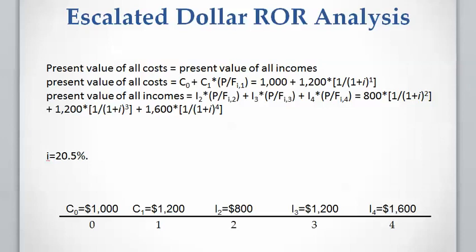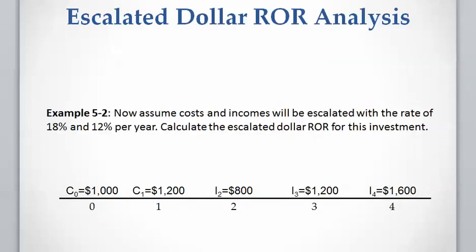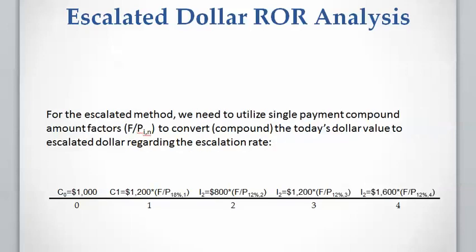Now let's consider an escalation rate of 18 percent for costs and an escalation rate of 12 percent for income. Let's calculate the escalated dollar cash flow and then calculate the rate of return for the escalated dollar cash flow. To calculate the escalated dollar cash flow, we need to compound each payment by the escalation rate, considering the compounding periods.